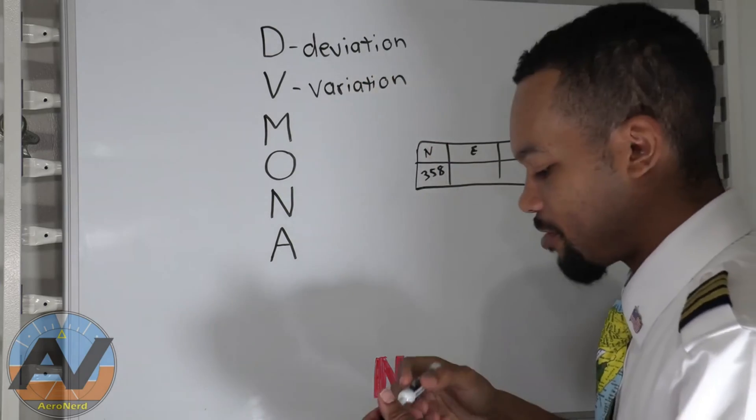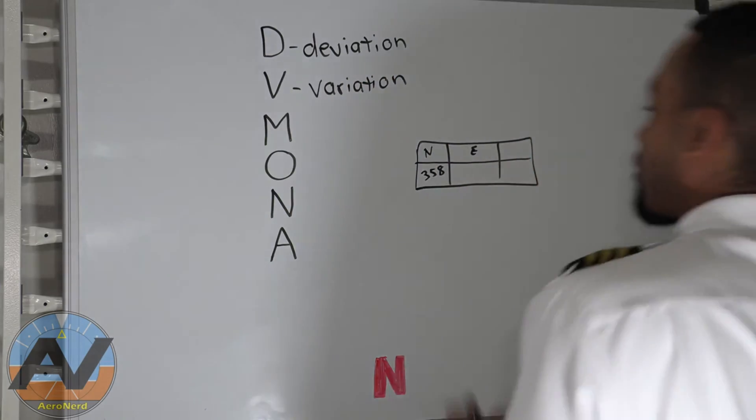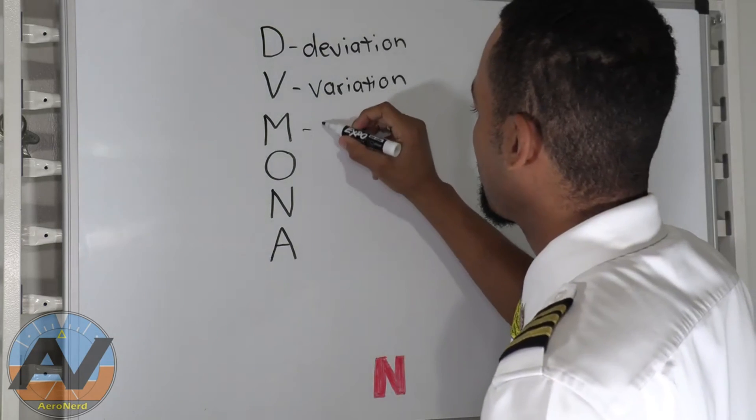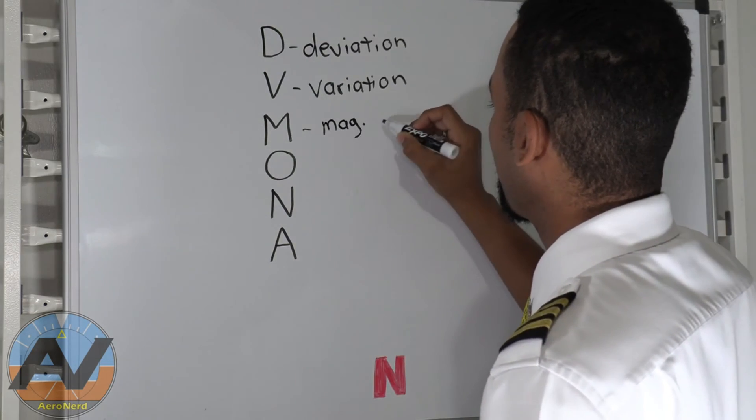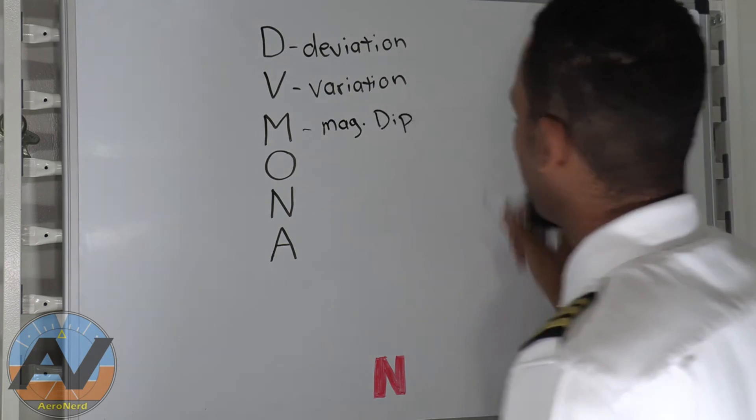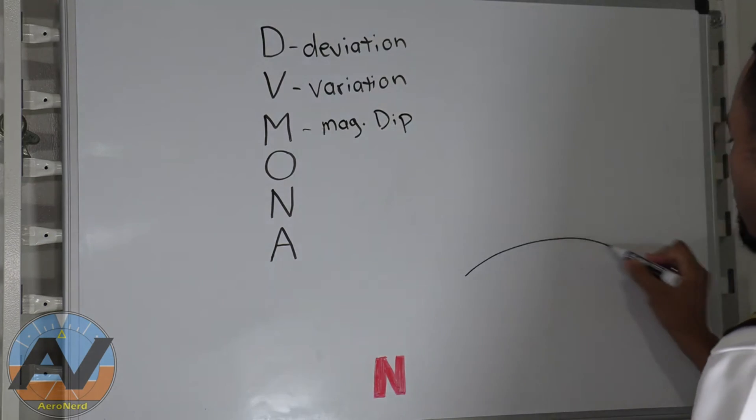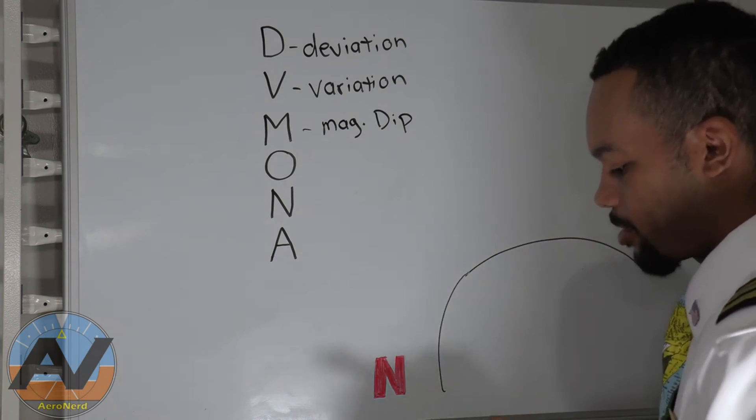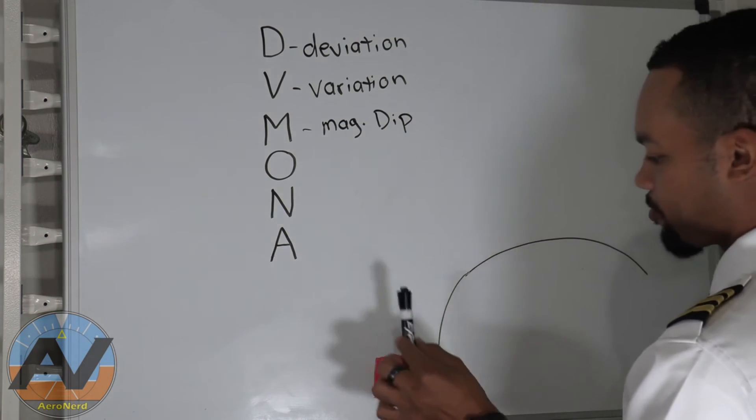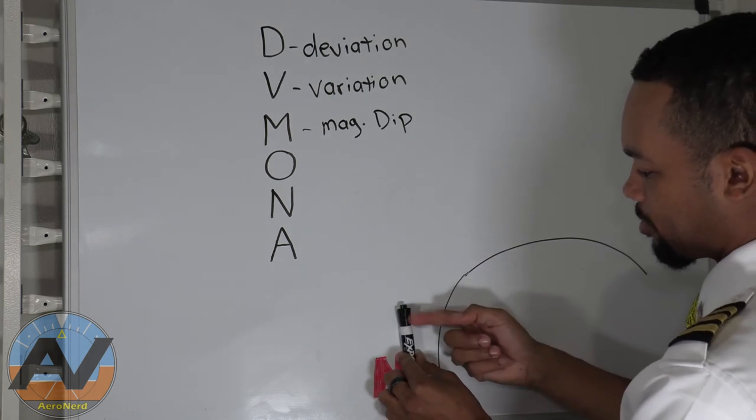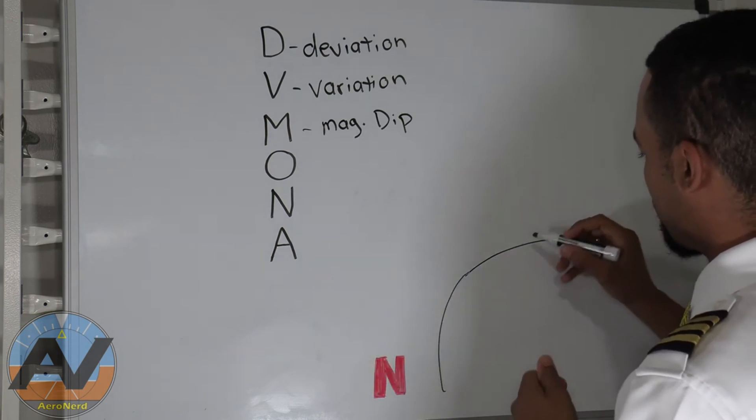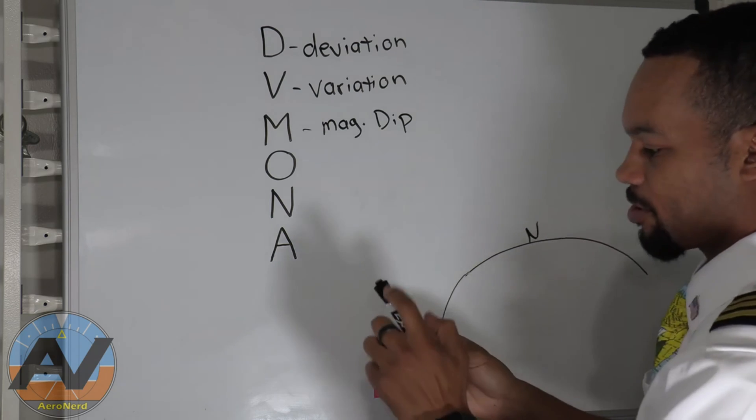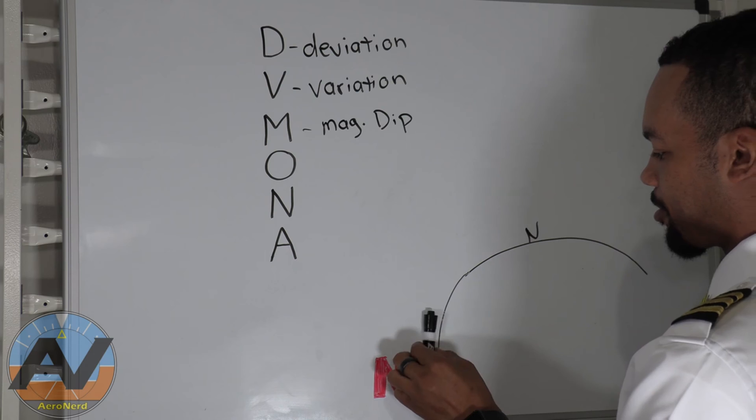And we're going to go to magnetic dip. So here's the earth right here. Let's say here's our compass right here. Now our magnetic dip, this is the north. Let's put the north right here. So here's north. So this is always attracted to the north, always, always, always.